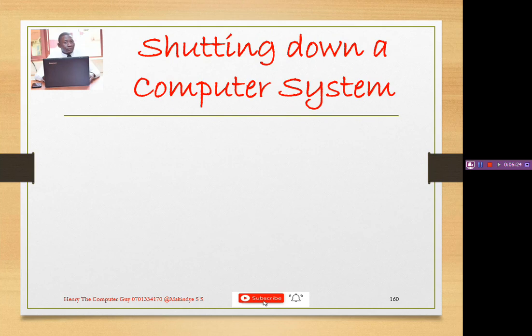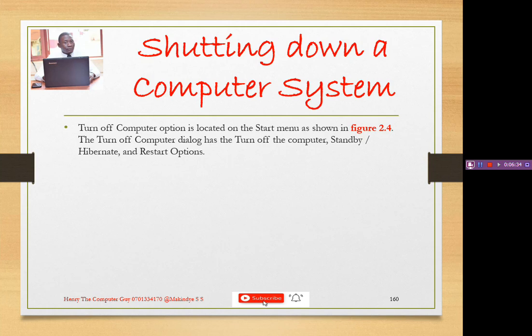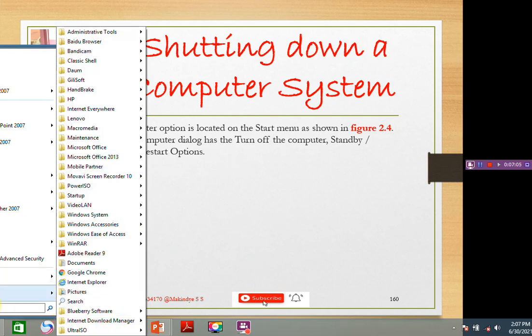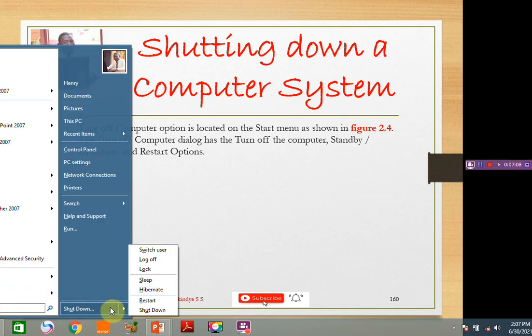Shutting down a computer: we are going to see how to shut down a computer that has been on and in use. The turn off computer option is located on the start menu as shown in figure 2.4. The turn off computer dialogue has options including turn off, standby, hibernate, and restart. When you click on Start and go to Shutdown, you will find several options such as switch user.